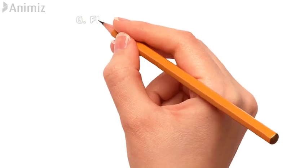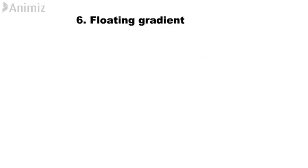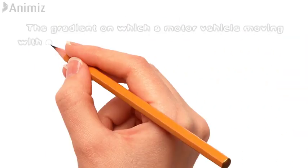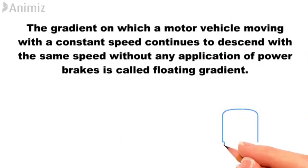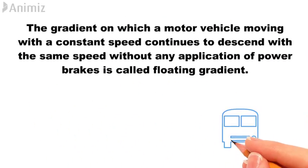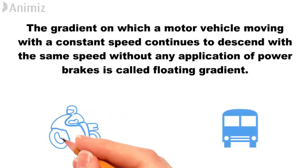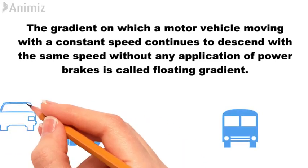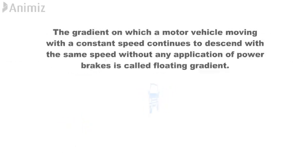6. Floating gradient. The gradient on which a motor vehicle moving with a constant speed continues to descend with the same speed without any application of power brakes is called floating gradient.